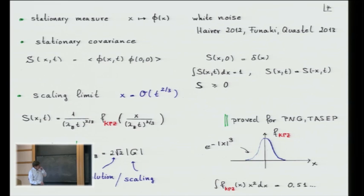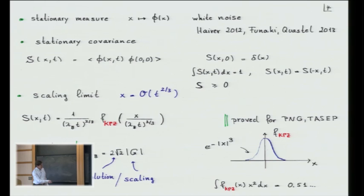I have normalized things so that the stationary measure has unit strength. Because it's a probability measure, the integral is one. If I modify the strength of the measure, there would be extra factors. The main point is this non-universal lambda_B. By scaling we know it depends simply on the coupling constant, but the prefactor which we can only get from the exact solution — that happens to be 2 times the square root of 2 in this particular case.